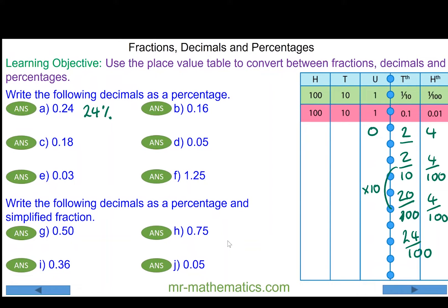If we have 0.16, we have ten hundredths plus six more, so in total we have sixteen over a hundred, sixteen percent. With 0.18, we have eighteen hundredths, which is eighteen percent.